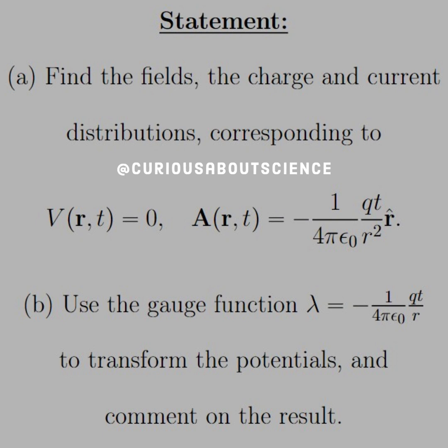All right, so for this particular problem, we have two parts. Part A: find the fields, the charges, and the current distributions corresponding to V(r,t) equals 0 and A(r,t) equal negative 1 over 4 pi epsilon naught Qt over r squared in the r hat direction. That looks kind of funky, but we'll go ahead and deal with it.